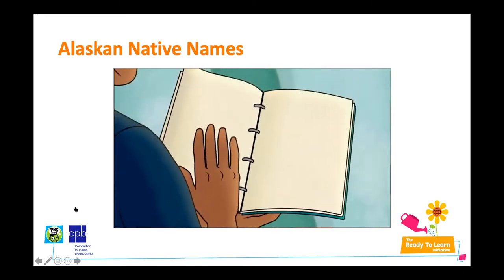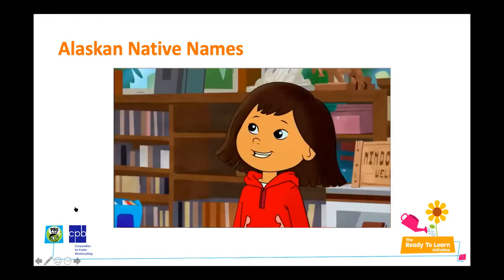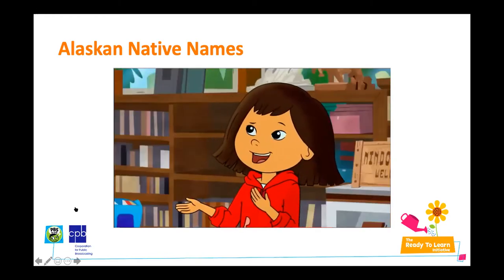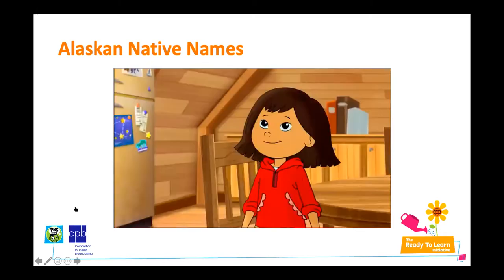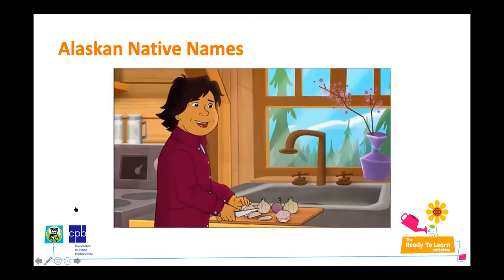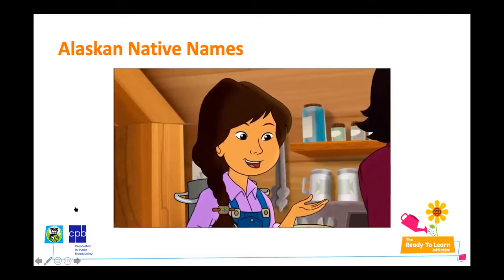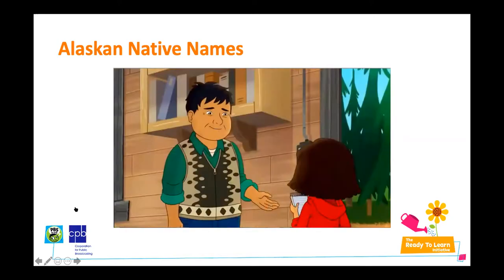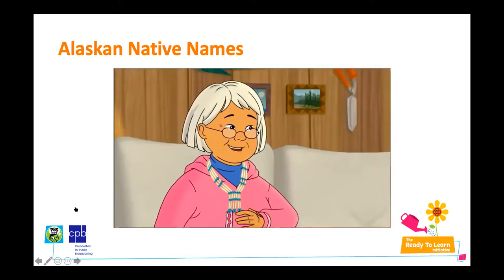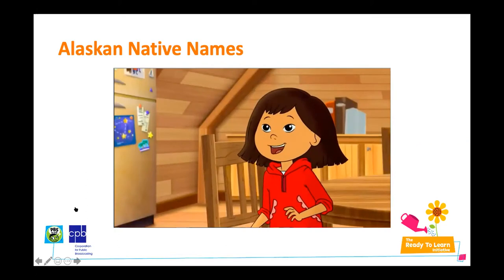Molly wants to give herself a native name meaning 'one who is amazing with animals,' but her community explains that traditionally, you don't name yourself — your native name is given to you. Community members share who gave them their names: an uncle, a grandmother, a great uncle, a great grandfather, a father. Molly learns that it's given to you by an elder. This is a wonderful example of the way that Alaska Native culture is infused into the show.